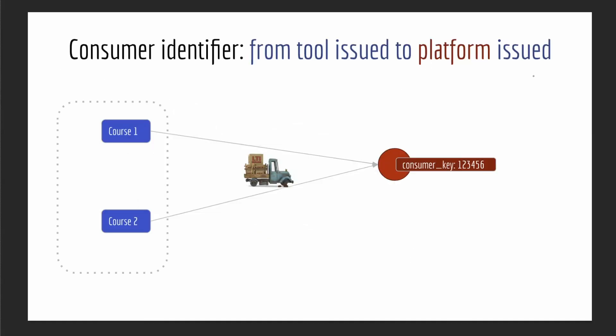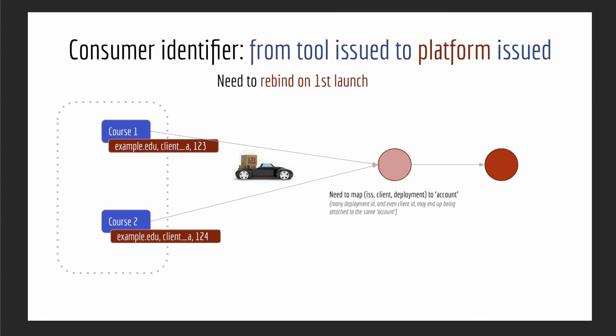Another important change in LTI Advantage is how you identify the platform or institution making the launch. In LTI 1.1, you as a tool crafted a key and secret and gave it to the LMS — one key and secret could be used across multiple deployments. You could have multiple course-level deployments all using the same key and secret, and you'd know which account was talking to you from the LTI payload.